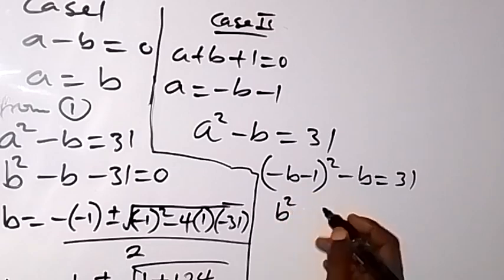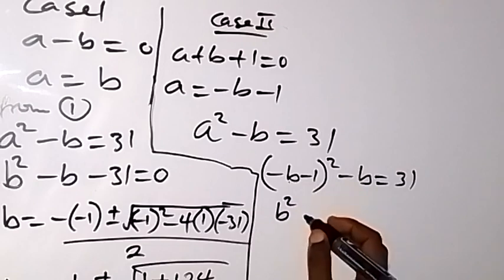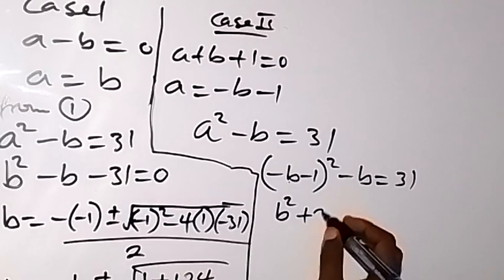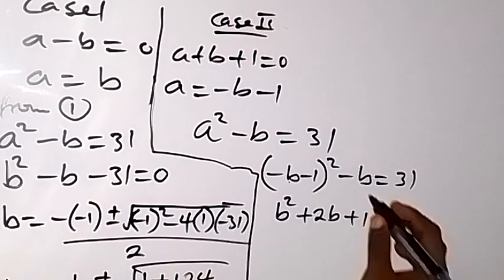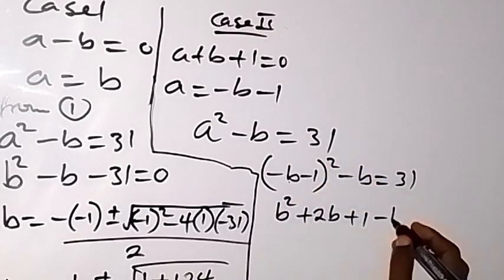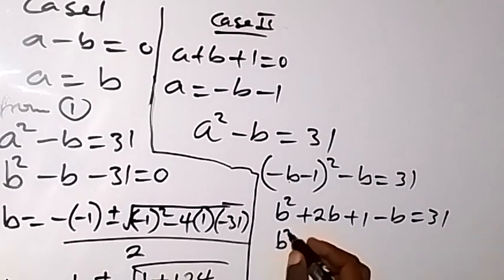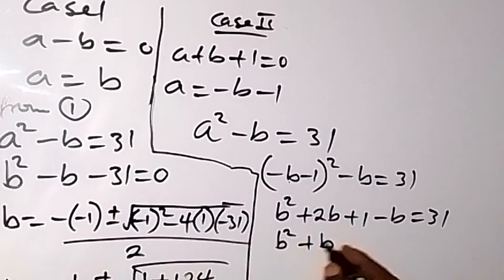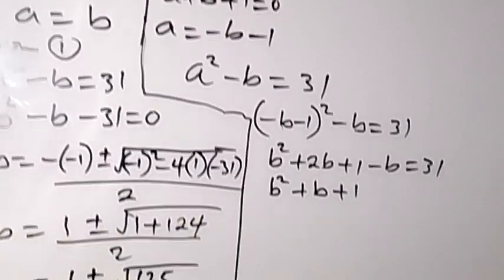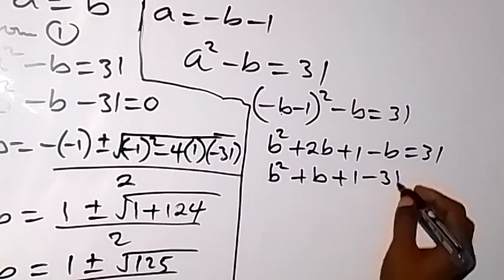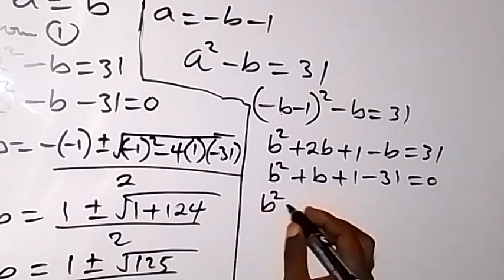Expanding (−b − 1)² gives b² plus 2b plus 1. So we have b² plus 2b plus 1 minus b equals 31, which simplifies to b² plus b plus 1 minus 31 equals 0.